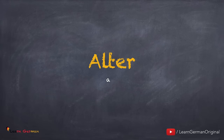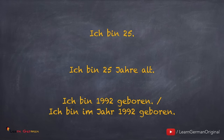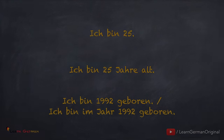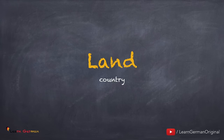Natürlich sagst du hier deinen eigenen Namen und nicht Sam Müller. Als nächstes sprechen wir über Alter. Man kann sagen: ich bin 25, oder ich bin 25 Jahre alt. Du kannst auch sagen: ich bin 1992 geboren, oder ich bin im Jahr 1992 geboren.